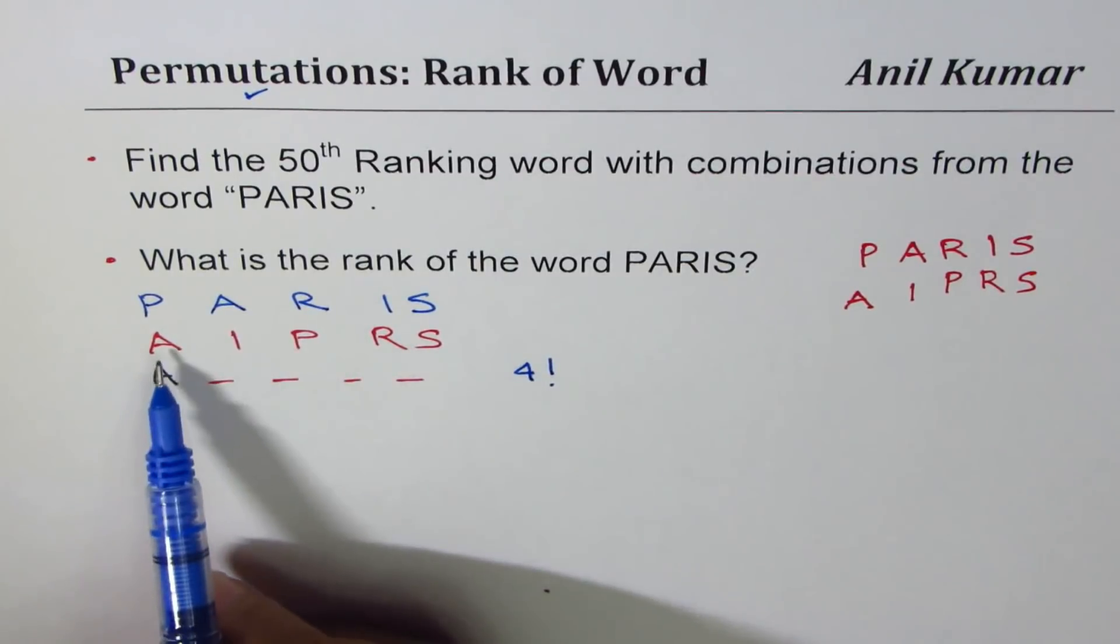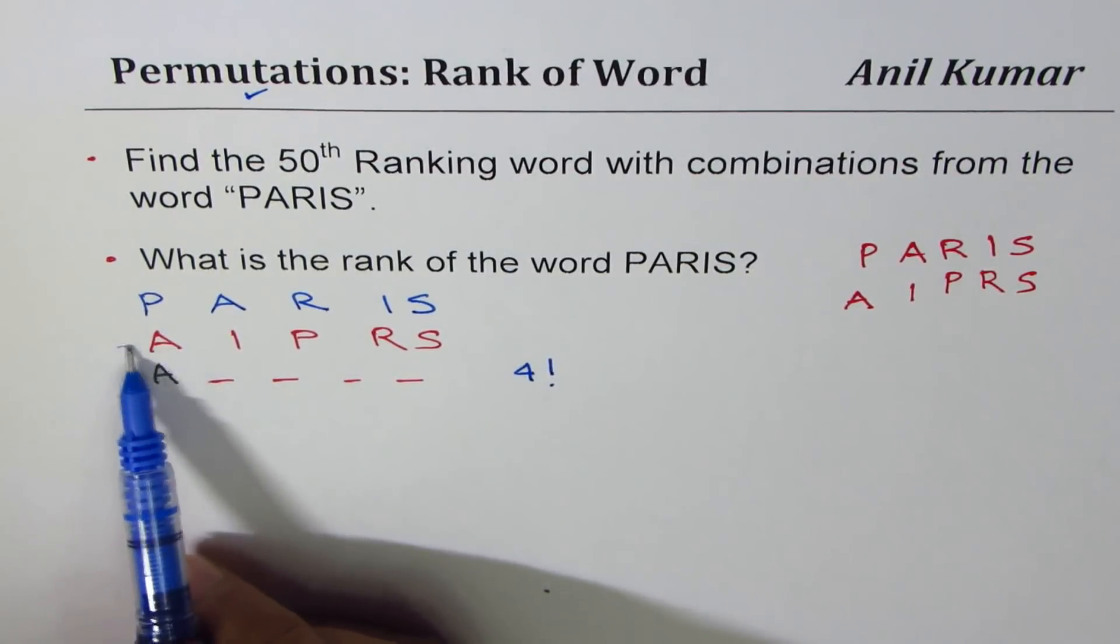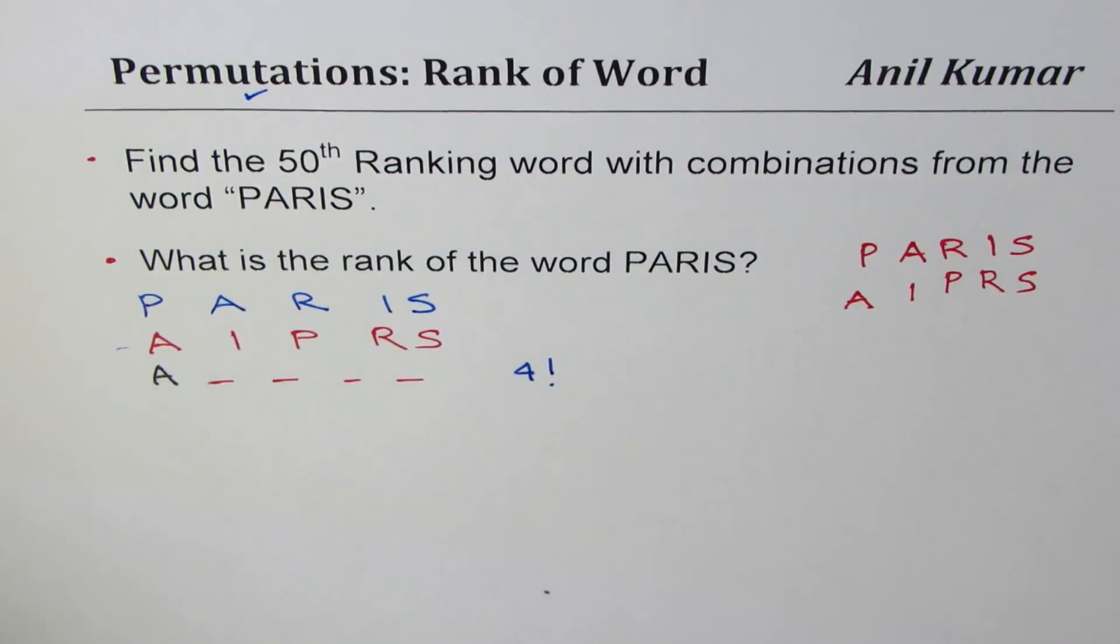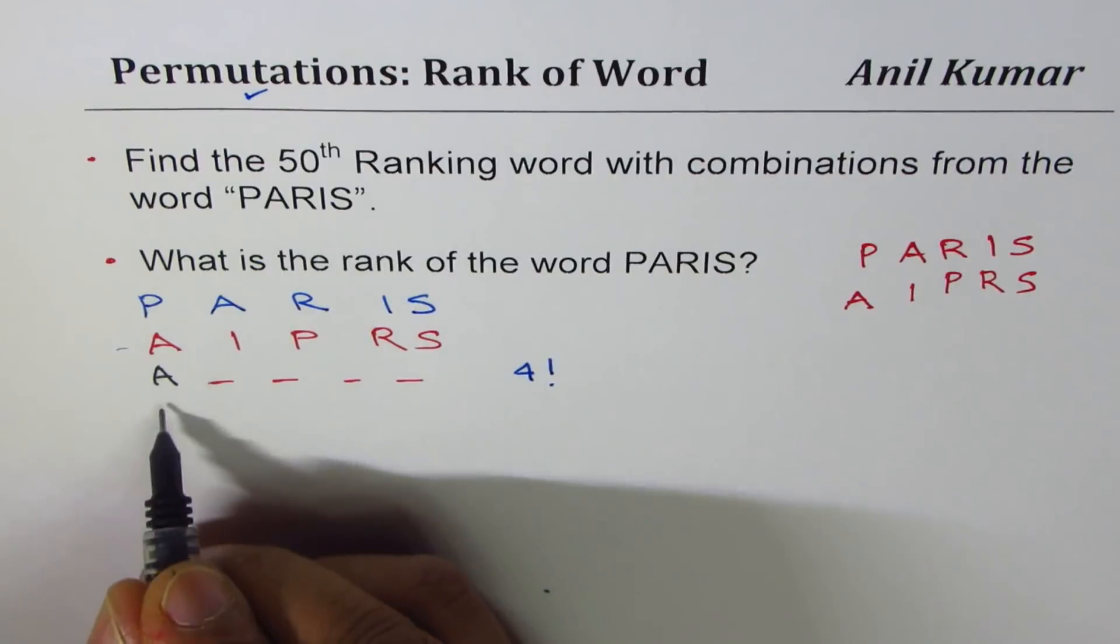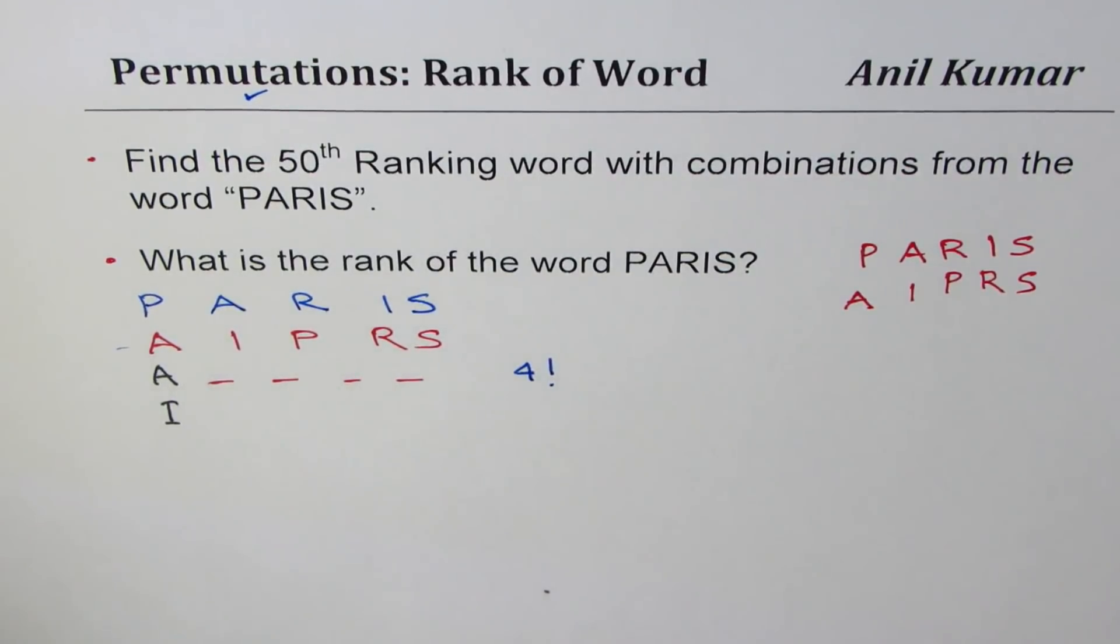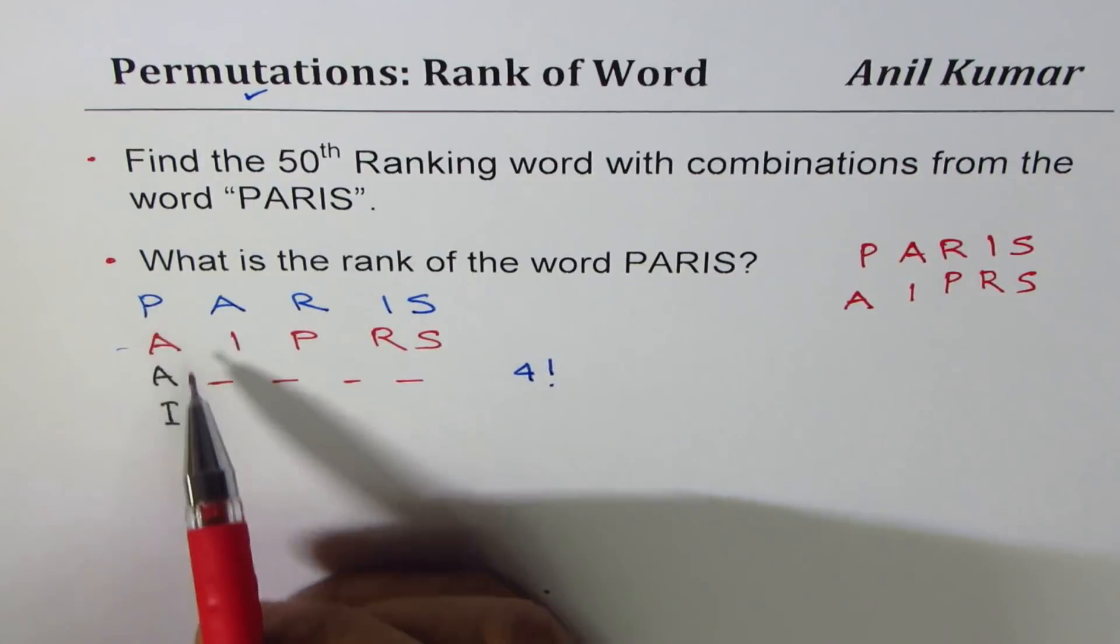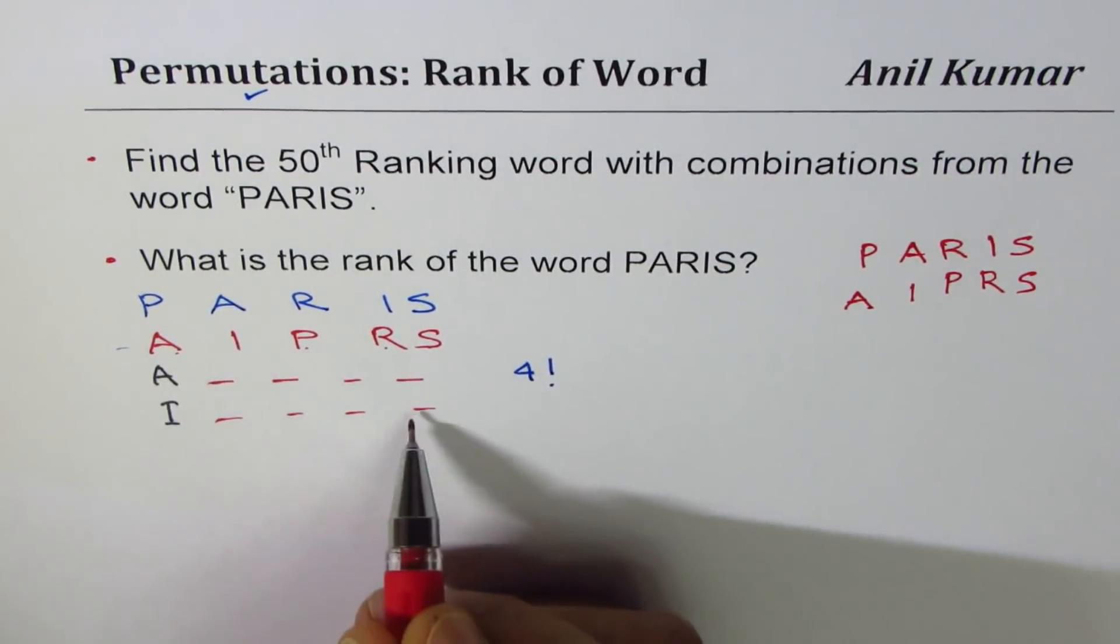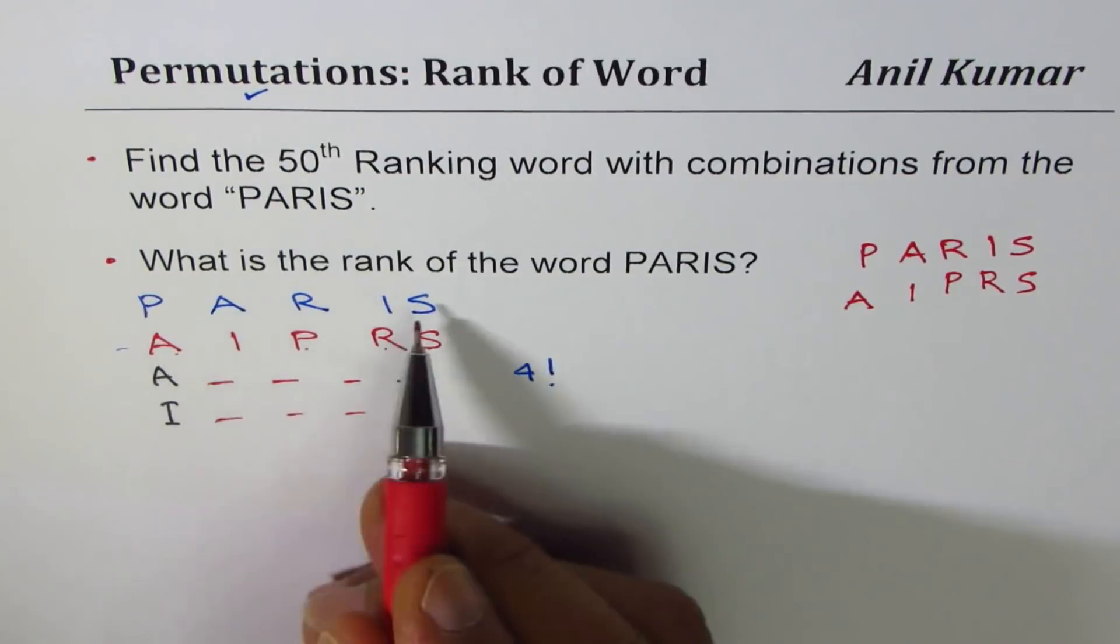So that gives me all the letters starting with A. Next, we have to check the words starting with I. So if I start with I, I could again fill these positions with one of these letters. And these words formed will come before Paris.